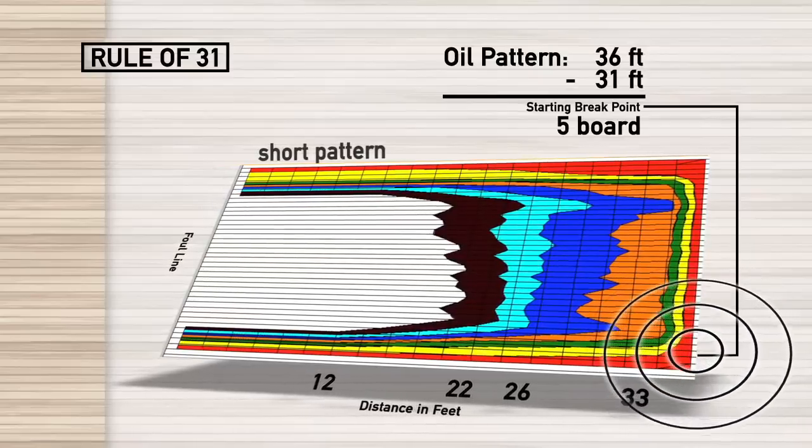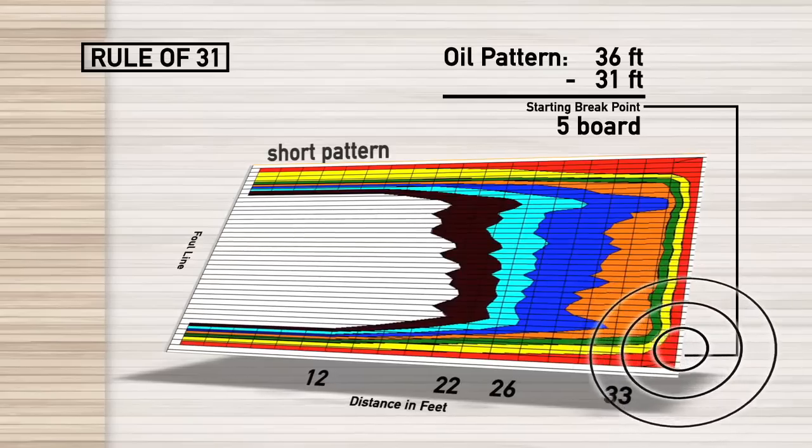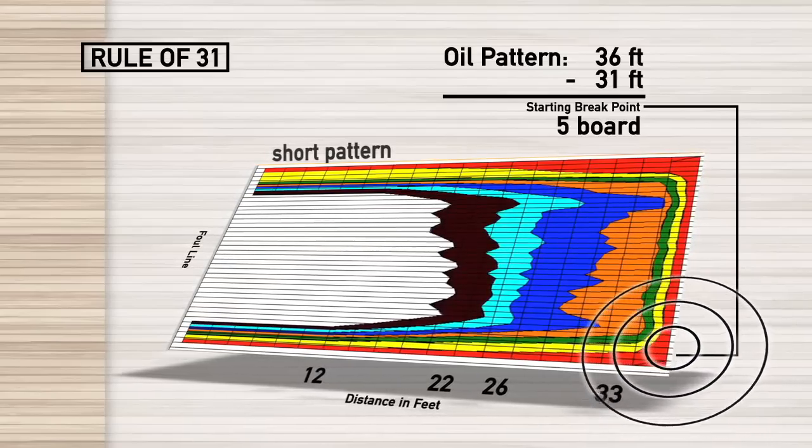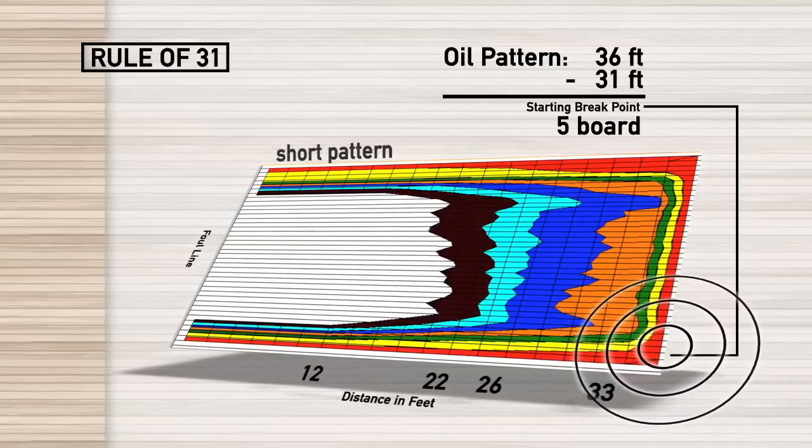If you're a higher rev rate player, that may be closer to 1, 2, 3. If you're a higher speed, lower rev player, it might move in just a little bit, into 5, 6, 7.